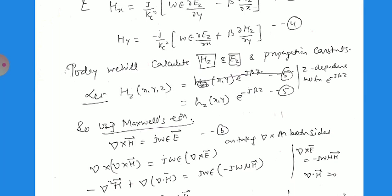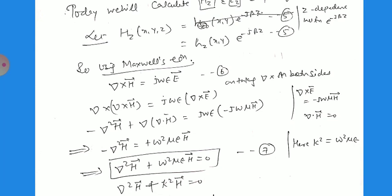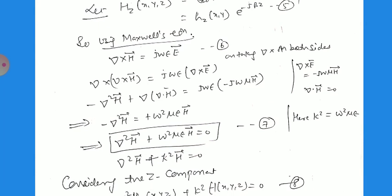We can use Maxwell's equations. We know that del cross H equals j·omega·epsilon·E. Taking the curl on both sides: del cross del cross H equals j·omega·epsilon times del cross E. Expanding del cross del cross H using the BAC-CAB rule gives minus del²H plus del(del·H) equals j·omega·epsilon times del cross E, where del cross E equals minus j·omega·mu·H. Since del·H equals zero, the second term vanishes, and we obtain del²H plus k²H equals zero, where k² equals omega²·mu·epsilon. Here k is the propagation constant.